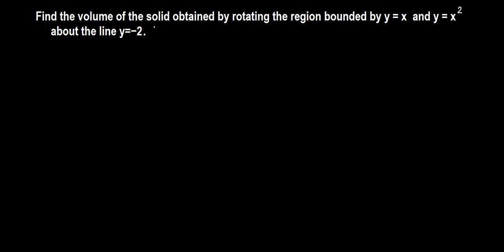Find the volume of the solid obtained by rotating the region bounded by curves y equals x and y equals x squared about the line y equals negative 2.